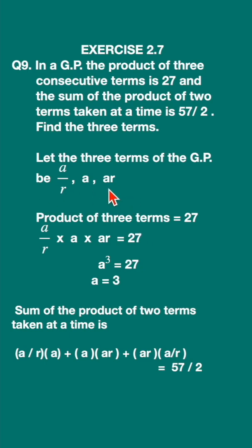So these are the three terms. Product of the three terms—multiply these three—you will get a cubed is equal to 27. So a is equal to 3. So you got the value of a.